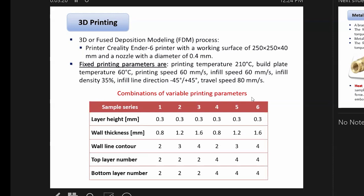When we talk about 3D printing or FDM printing process, we used Creality Ender 6 printer with working surface 250 by 250 by 400 millimeters cube area volumetric area and nozzle diameter of 0.4 millimeters.